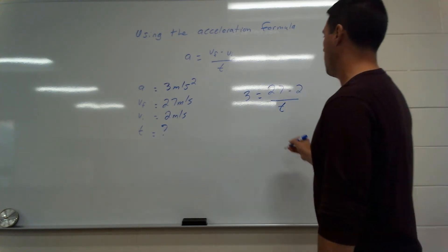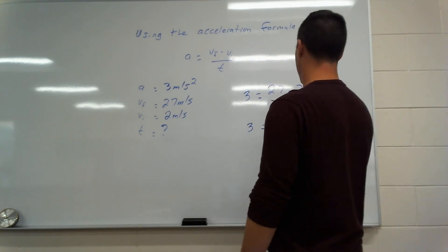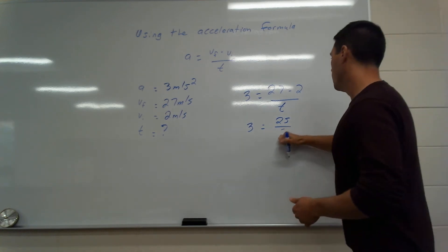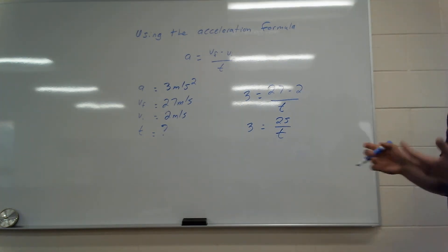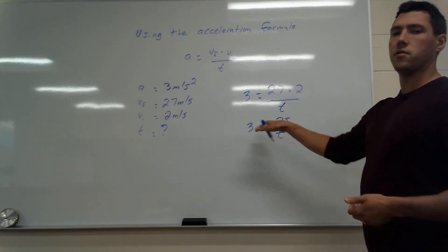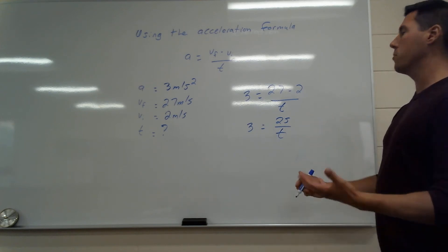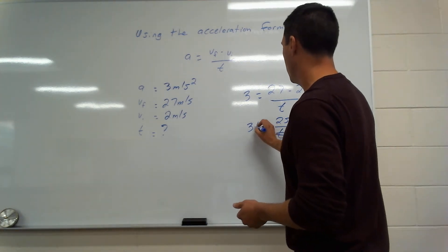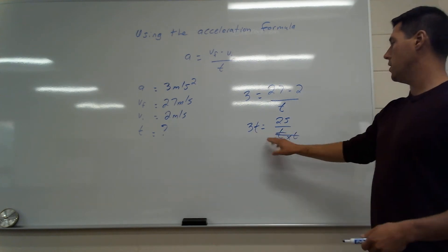First simplify the numerator: 27 minus 2 is 25, so we have 3 equals 25 over t. To get rid of t from the bottom, we multiply both sides by t — the t cancels on the right — giving us 3t equals 25.